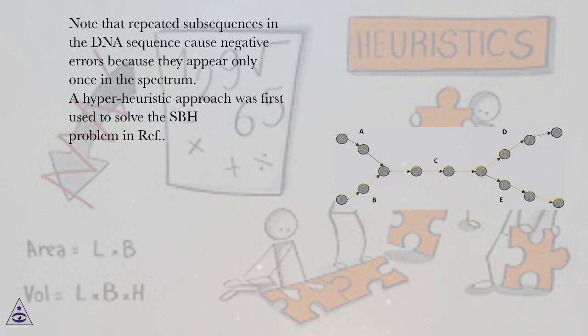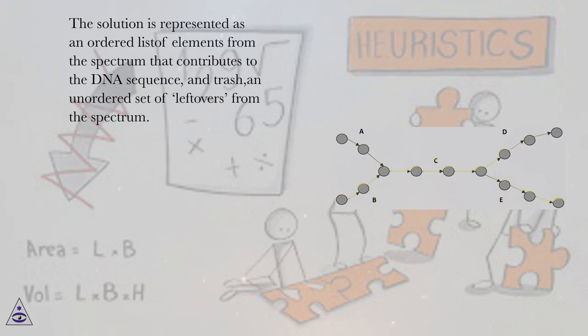A hyper-heuristic approach was first used to solve the SBH problem. The solution is represented as an ordered list of elements from the spectrum that contributes to the DNA sequence, and trash, an unordered set of leftovers from the spectrum.